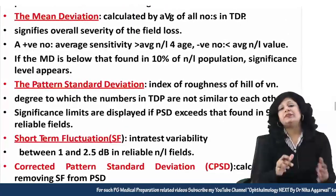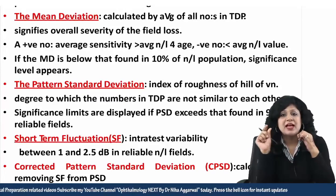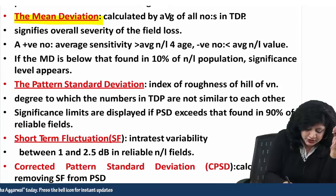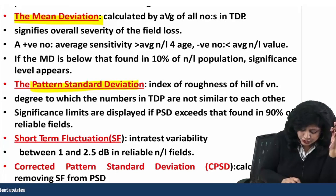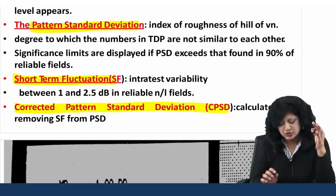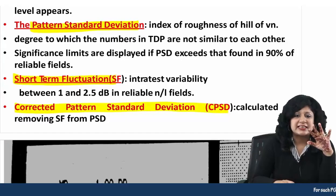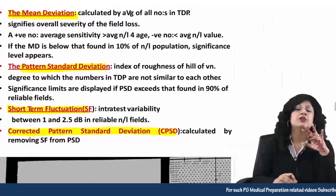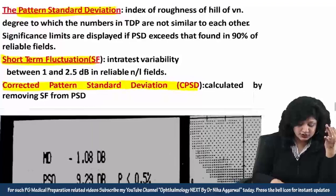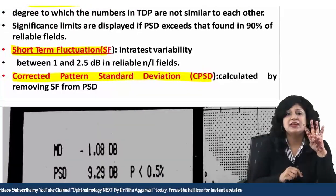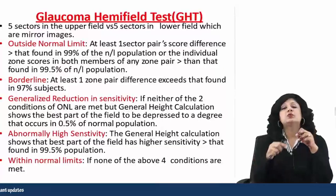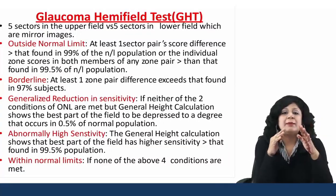In global indices, we have certain values and indices. One is your mean deviation (MD), then we have pattern standard deviation (PSD), then short-term fluctuations, and corrected pattern standard deviation (CPSD). These four indices are used.